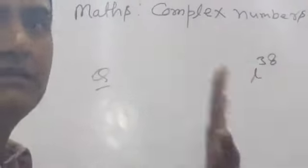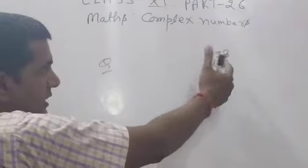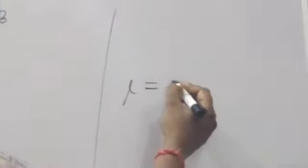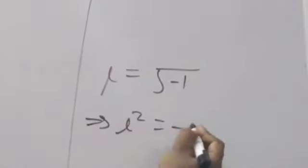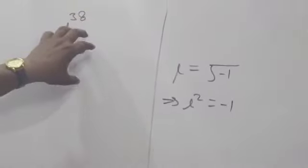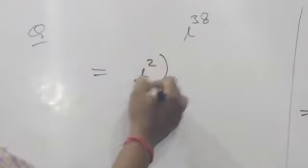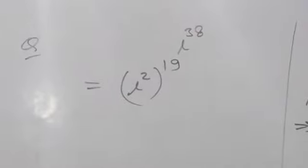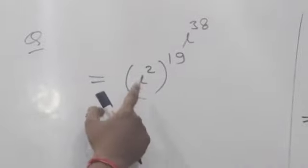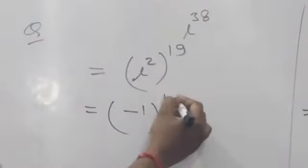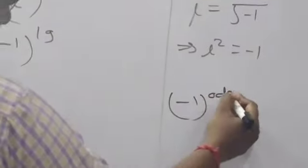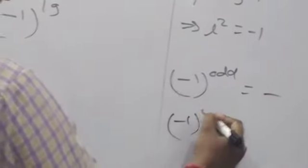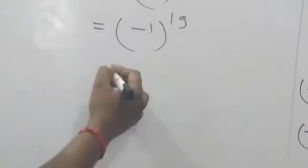Now, integer powers of i: i = √(-1), so i² = -1. If any integer is in the power form of i, first we can break it into i² form. For example, i^38 = (i²)^19. Now the value of i² = -1, so (-1)^19. We know that (-1) raised to an odd power equals -1.